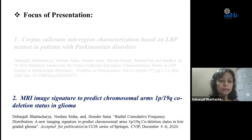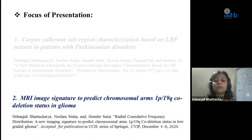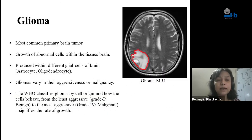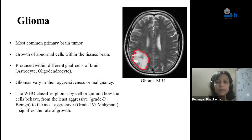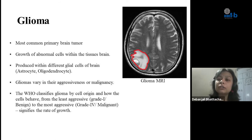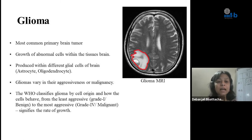The next part of the presentation is on glioma. The topic is: MRI image signature to predict chromosomal arms 1p19q co-deletion status in glioma. Glioma is the most common primary brain tumor occurring due to growth of abnormal cells within brain tissue. It is called glioma because it is produced within different glial cells. WHO classifies glioma by cell origin and behavior from least to most aggressive — Grade 1 to Grade 4. Glioma vary in aggressiveness: Grade 1 is slow-growing and likely curable, while others are fast-growing, invasive, and very difficult to treat.